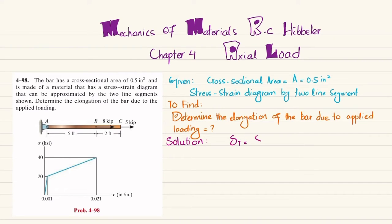The total elongation in this bar will be equal to elongation in bar AB plus elongation in bar BC. We know that change in length is equal to PL divided by AE, but the material properties are not directly given in that form, so we cannot apply this equation directly.